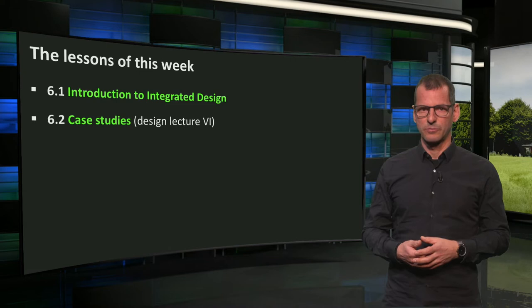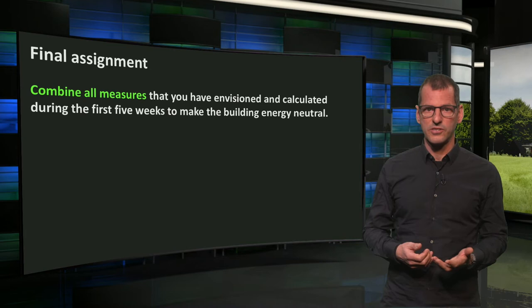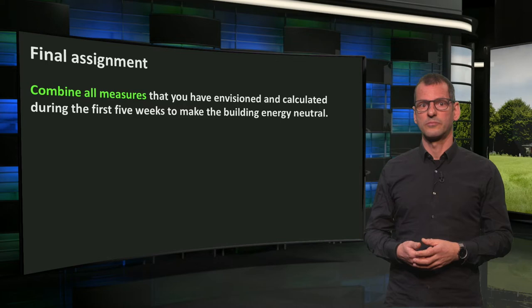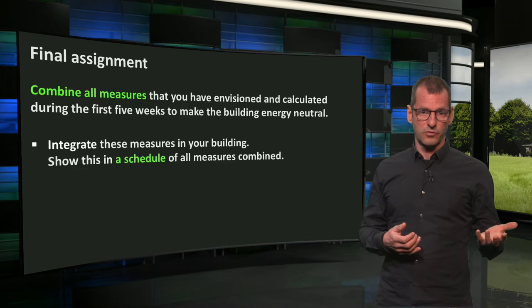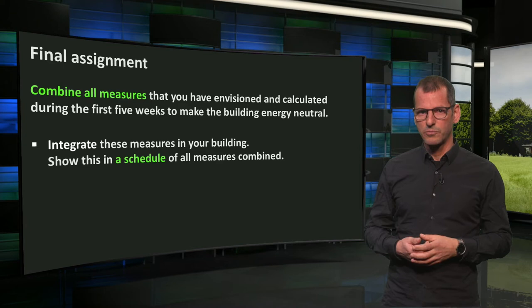Based on this information, you will have to finish your final assignment. This assignment actually seems quite simple: combine all measures that you have envisioned and calculated through the first five weeks to make the building energy neutral. For this, we ask you to integrate all measures proposed in the architecture of your building. You can show this by means of a scheme that depicts all measures combined — for instance, floorplans, sections, details.